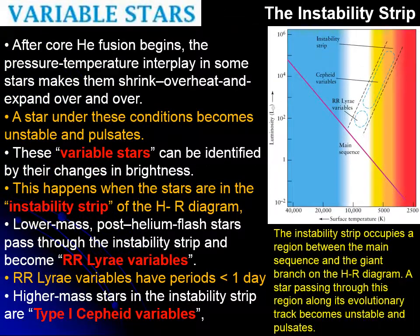Variable stars occur as a star becomes a red giant. Depending on the size, mass, and temperature conditions of the star, it can go through a region where expansion is not uniform, and the star becomes contracted and expanded repeatedly, changing its luminosity. When that happens, these stars are known as variable stars.